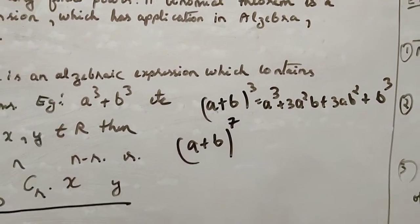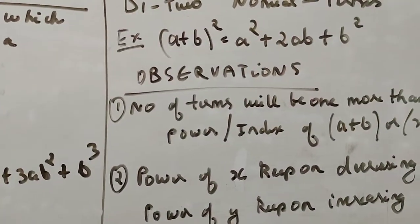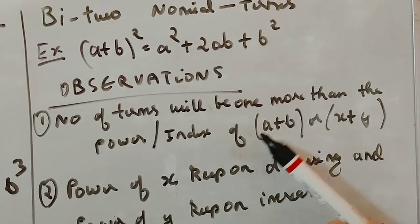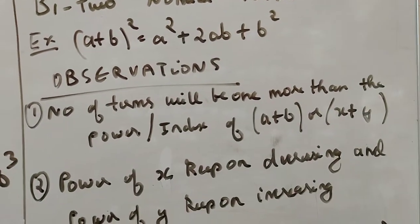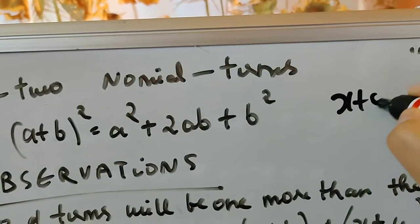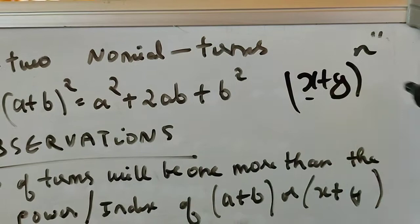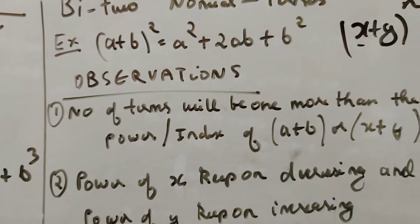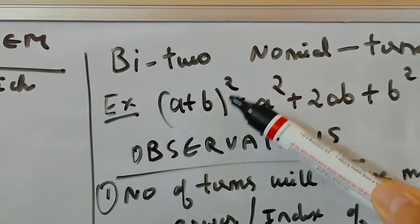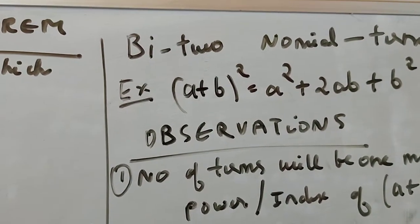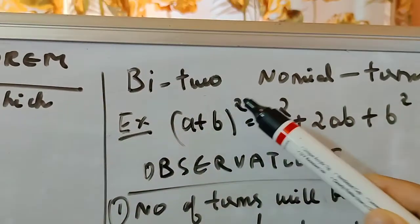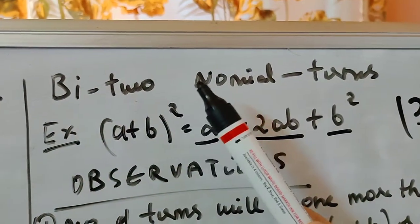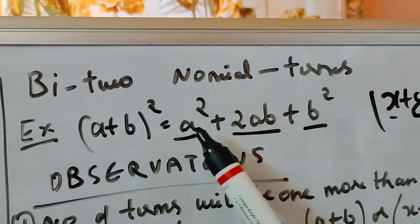Now, let's look at observations of the binomial theorem. First observation: the number of terms will be one more than the power or index of a plus b or x plus y. For example, in a plus b whole square, you get three terms and the power is two — so three is one more than two.